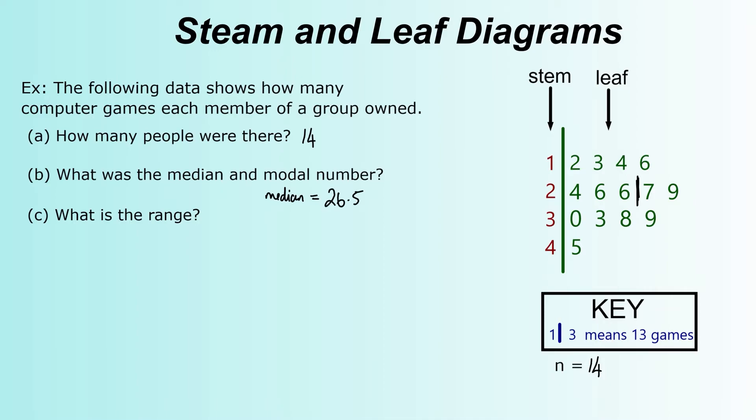The mode or the modal number is the most common. And there's only one number in this whole stem-and-leaf diagram that's repeated, and that's two 6s here. So that's 26. Remember it partners up with the 2 beside it. So 2, the stem, and then the leaf, 26, 26. That's the only number that repeats.